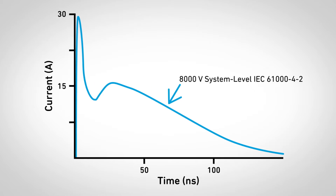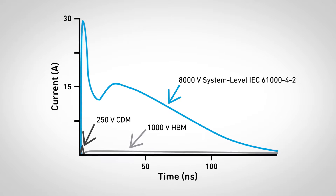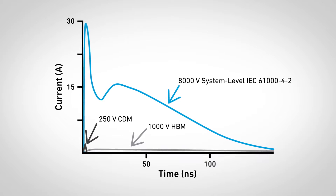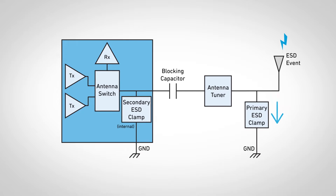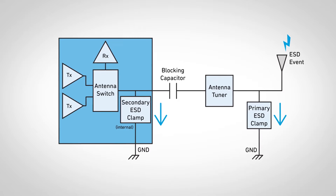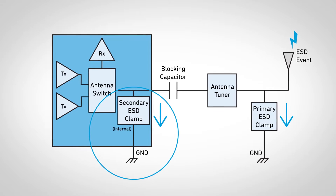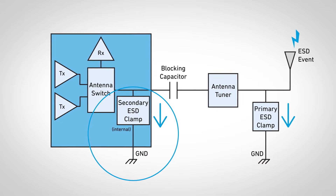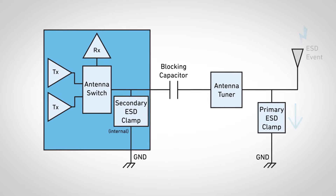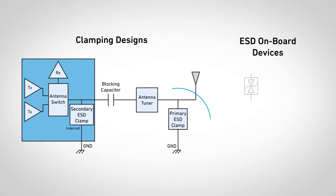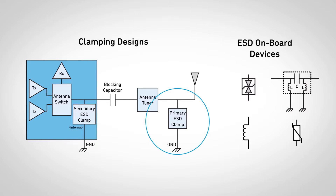The IEC 61000-4-2 pulse is the most stringent of the ESD tests. The goal of SEED methodology is to shorten design cycles while protecting system ICs from ESD failure. Secondary ESD protection is always present, but this only partially protects the device from an ESD stress. Using on-board primary clamping helps achieve the goal of full protection.